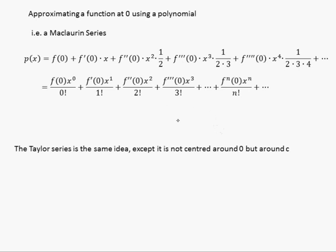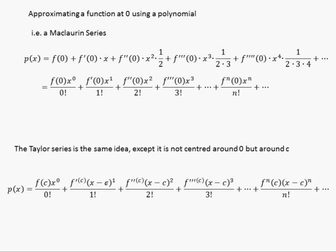The Taylor series is the same thing, but instead of being centered around zero, it's centered around some other x value of c. There's a small mistake here — this should be x minus c to the power of zero, but in reality it makes no difference, because x to the zero is the same as x minus c to the zero.